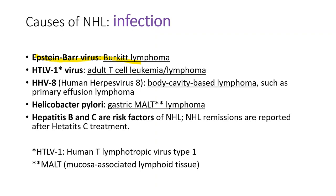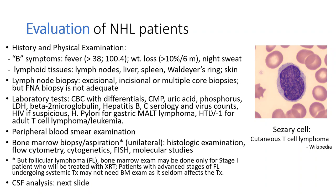Epstein-Barr virus can cause Burkitt lymphoma. HTLV-1 virus causes adult T cell leukemia lymphoma. Human herpesvirus 8 causes body cavity-based lymphoma, such as primary effusion lymphoma. Helicobacter pylori bacterial infection causes gastric MALT lymphoma — after treatment, most of these lymphomas resolve. Hepatitis B and C are risk factors for non-Hodgkin's lymphoma, and remission is frequently reported after hepatitis C treatment.